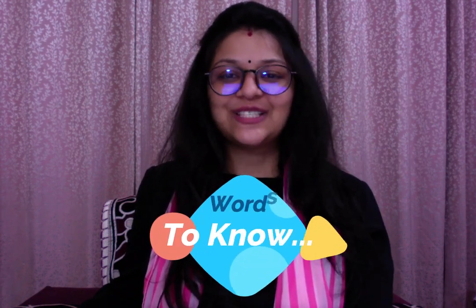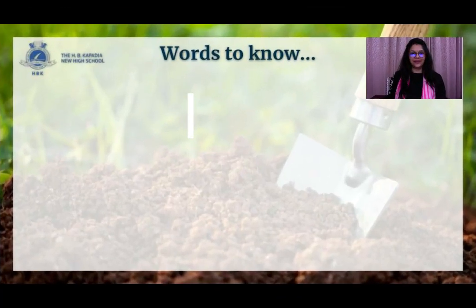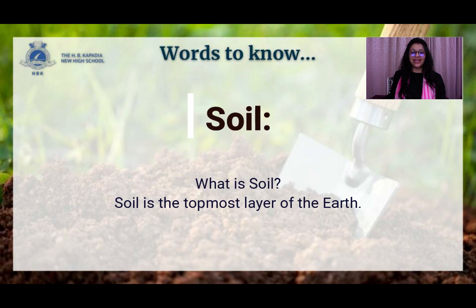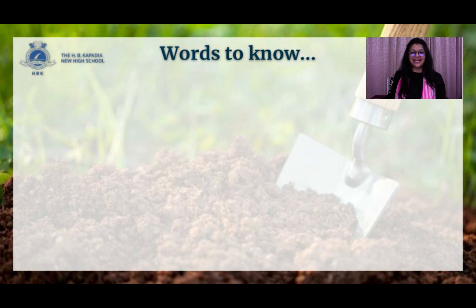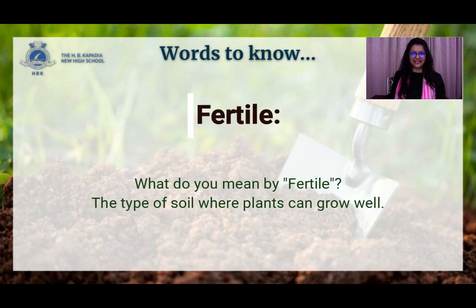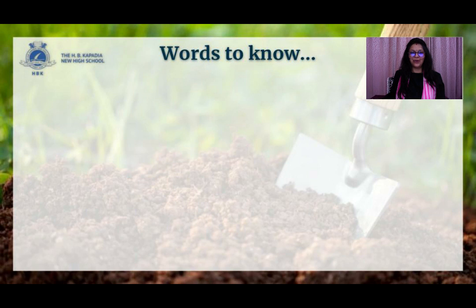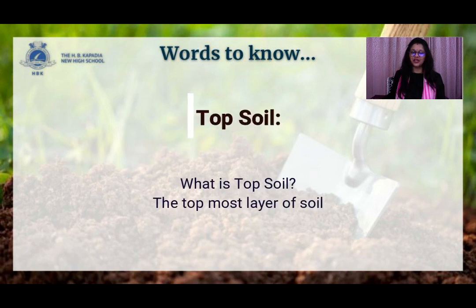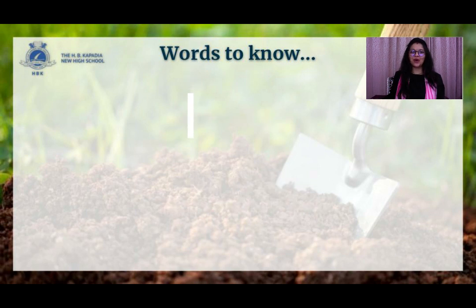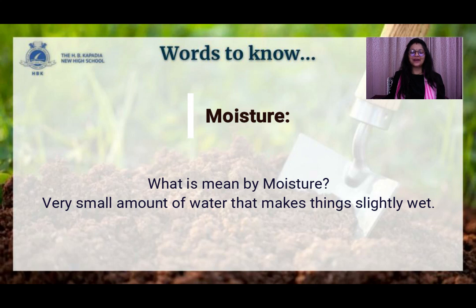Now let's see some words to know. The first word is soil — soil is the topmost layer of the earth. The second word is fertile — fertile is the type of soil in which plants grow well. The third is topsoil — the uppermost layer of soil is topsoil. The fourth is moisture — moisture is a very small amount of water that makes things slightly wet.